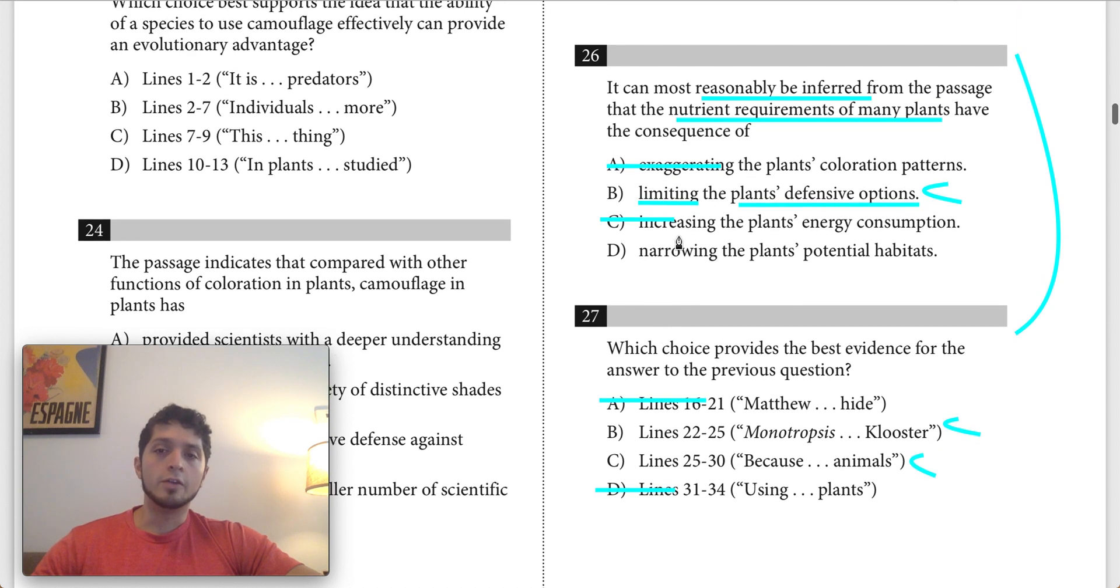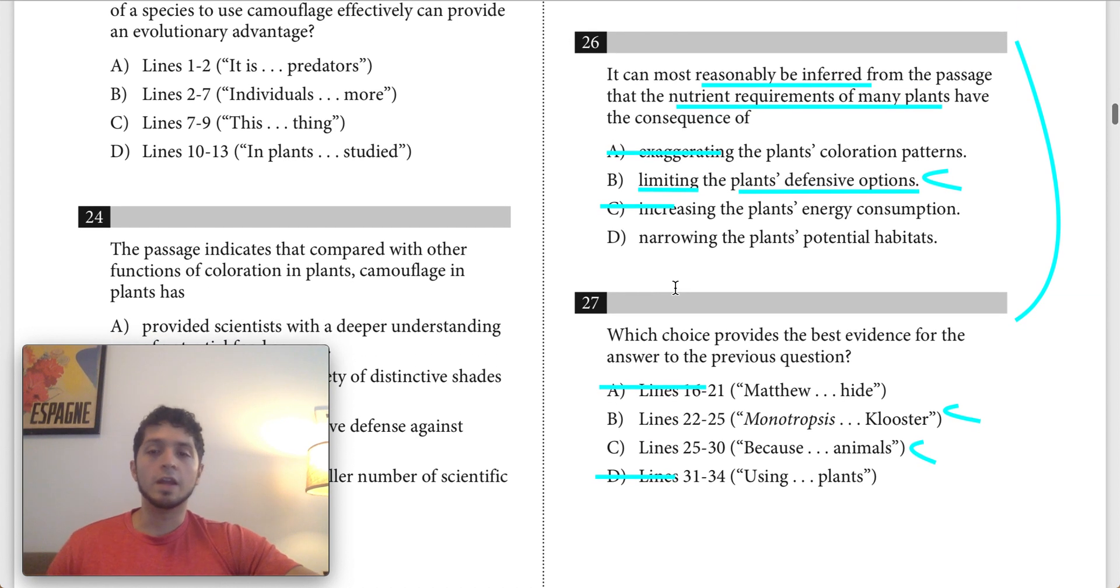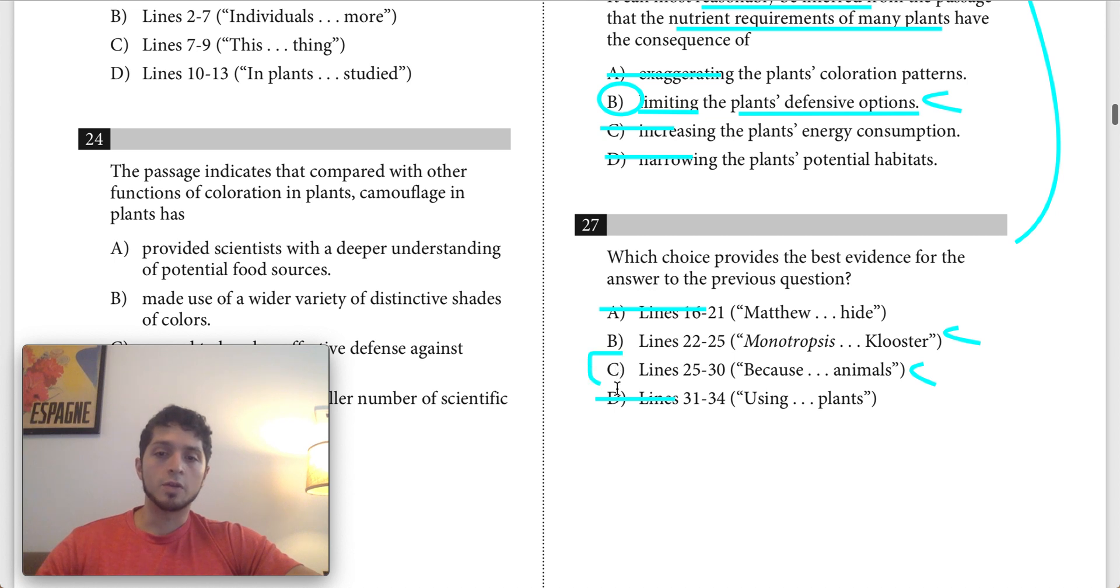D says the nutrient requirements of many plants have the consequence of narrowing the plant's potential habitats. This would basically be because certain plants need to conduct photosynthesis, that's going to limit the range of potential habitats that the plant can live in. But that's not really what's being said. What's being narrowed, what's being limited, is the range of possible coloration patterns, not anything about their habitats. So let's get rid of D, which leaves us with answer choice B for question 26 and answer choice C for question 27.